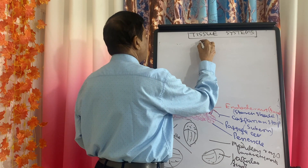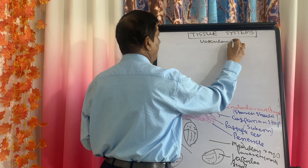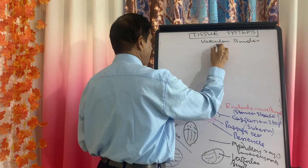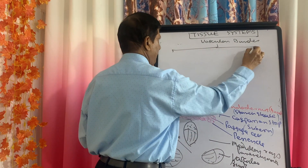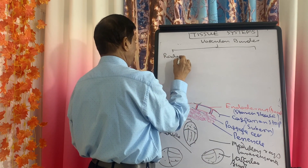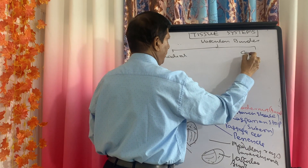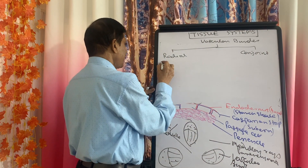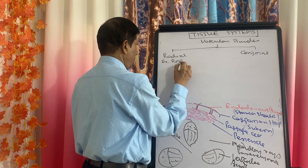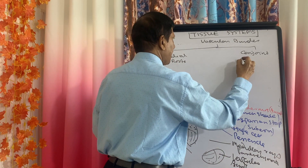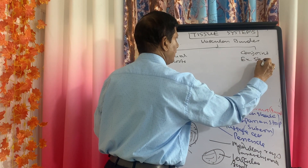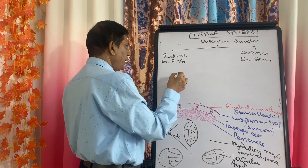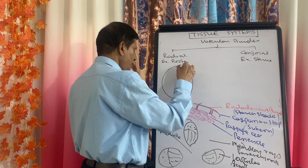The vascular bundles are mainly of two types: they may be radial or conjoined. Radial is characteristic of roots, while conjoined is characteristic of stems as well as leaves.